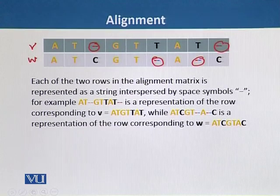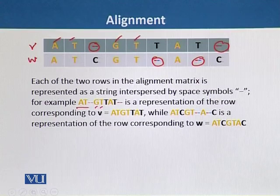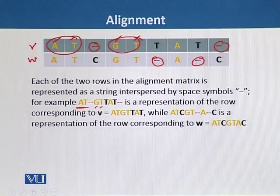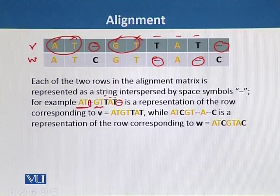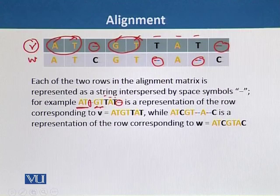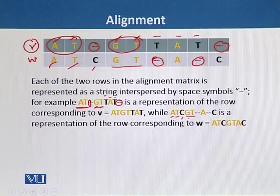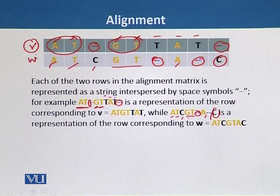We can denote spaces by a dash. For example, the V string A-T-G-T-T-A-T is written as A-T, then space, then G-T, then T-A-T, then space after T. This is the representation of the row corresponding to V. The W string is similarly written with spaces represented as dashes in the appropriate positions.